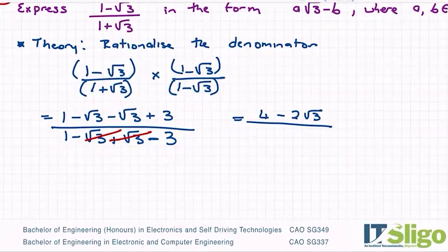So we end up with one minus three, which is minus two. So to tidy this up, you put each part over the minus two. So I'll end up with four over minus two minus two root three over minus two.